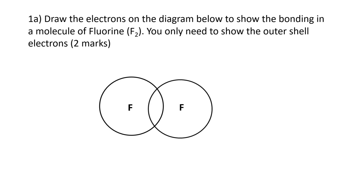Fluorine is in group seven on the periodic table so there are seven electrons on the outer shell. I'm going to start putting those on, just not putting them in the sharing zone where the shells overlap, not just yet. I've used crosses for the left hand atom so I'm going to put seven dots on the right hand atom. I recommend putting them on not in the sharing zone to start with so you can see how many electrons you've got, and then it's just a case of sliding the right number into the sharing zone.